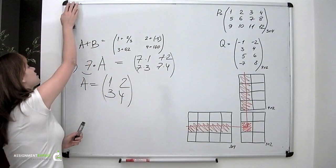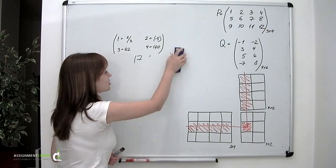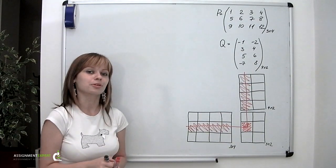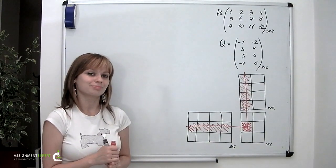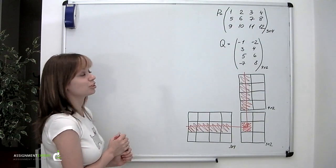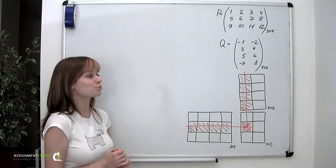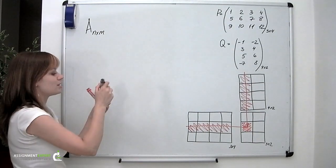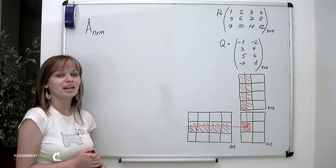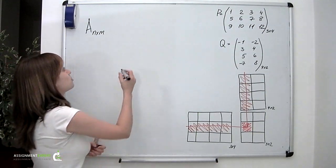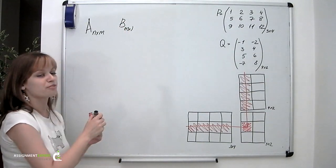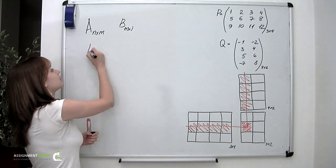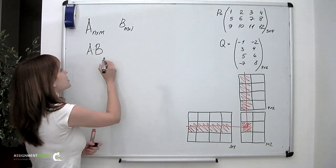And here comes the most interesting part: the multiplication of matrices, which results in the product matrix. First of all, there is one thing you should always remember — this procedure may only be performed on one condition: the number of columns of the first matrix being multiplied must equal the number of rows of the second matrix being multiplied. So if matrix A is of size n by m, it can only be multiplied by a matrix containing m rows. Matrix B of size m by l is a perfect choice. Having multiplied these two matrices, you will always obtain a product matrix of size n by l.